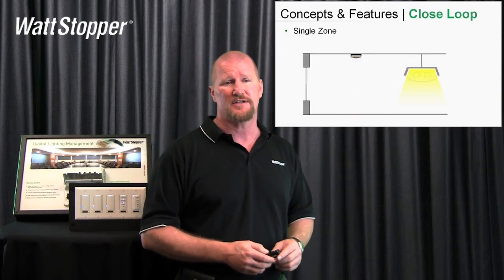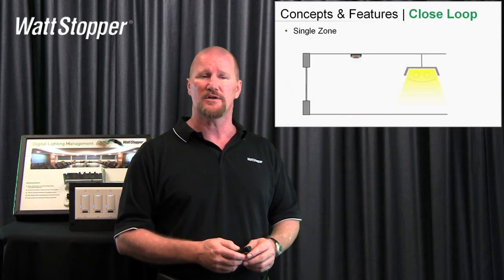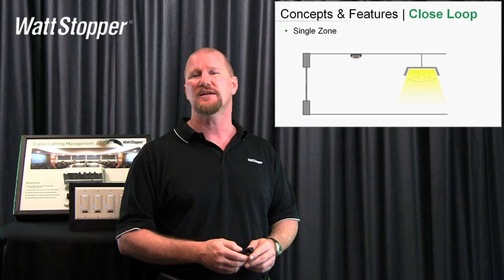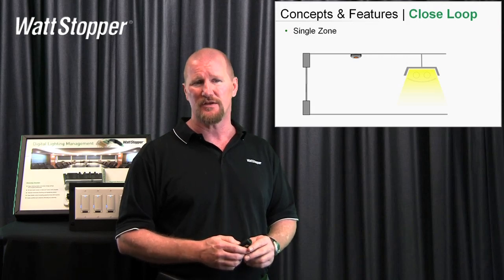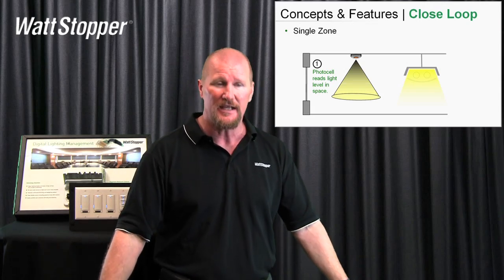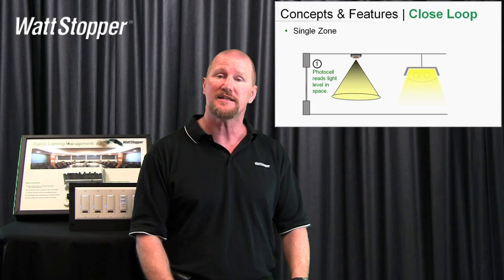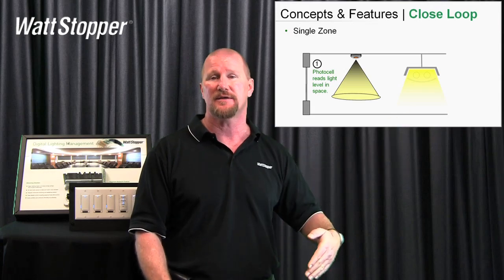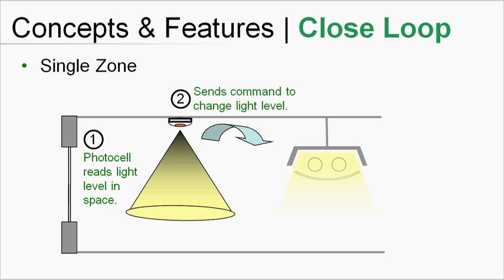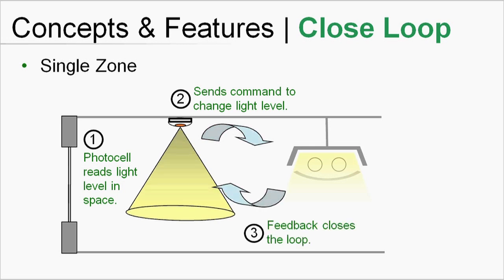Closed loop is the first one I want to talk about. By this great artist rendition, you'll see that I've got the photo sensor up in the center and I've got a pendant-hung light fixture. The photo sensor looks down into the space — this is the big distinction with closed loop. It's looking down into the space and it's going to take into account the electric light that's hitting there and any natural light coming in from the window. It then sends a signal to the light fixture which changes the light level, and then the photo cell sees that change, so the loop is closed.